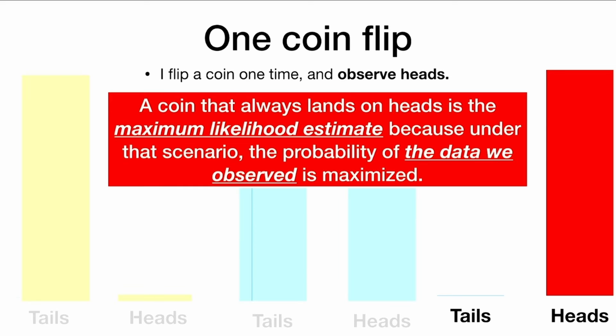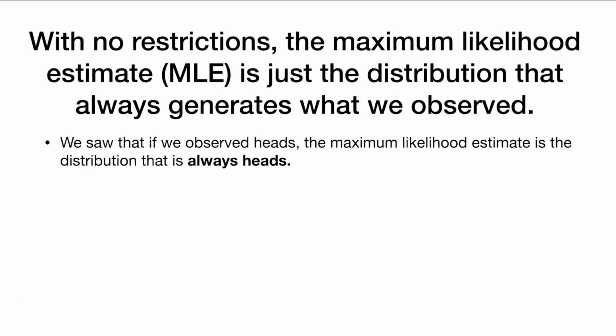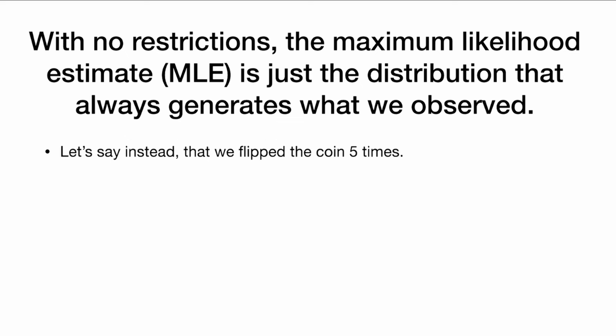So a coin that always lands on heads is the maximum likelihood estimate, because under that scenario, the probability of the data we observed is maximized. If this is the coin that we are flipping, then observing heads would happen 100% of the time. With no restrictions, the maximum likelihood estimate, or MLE, is really just the distribution that always generates what we observed.